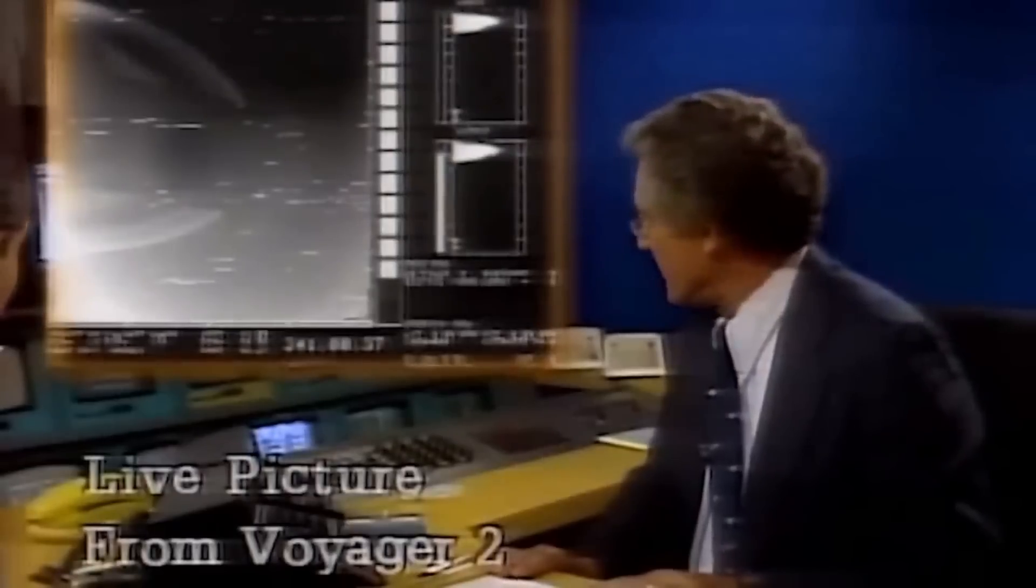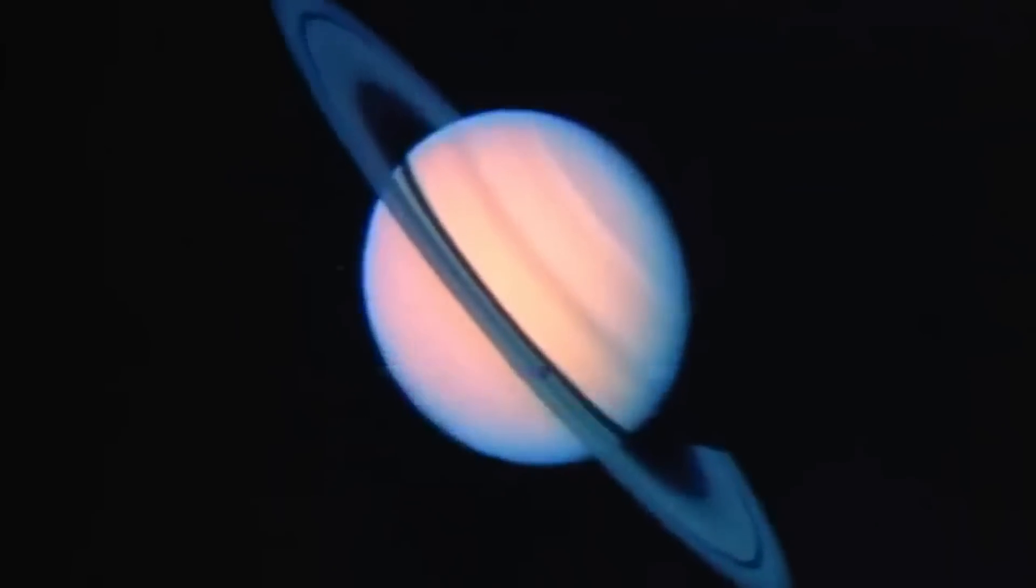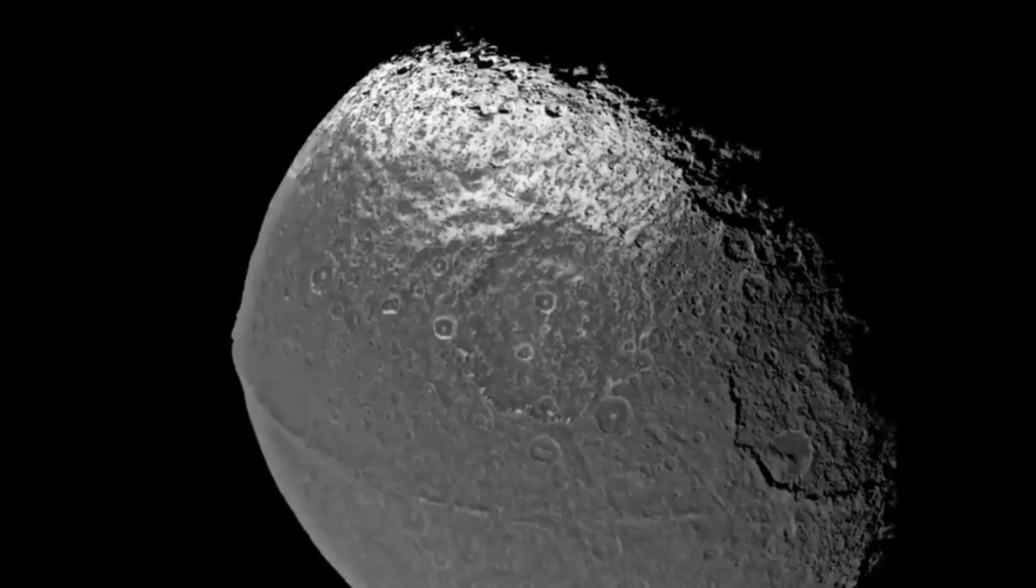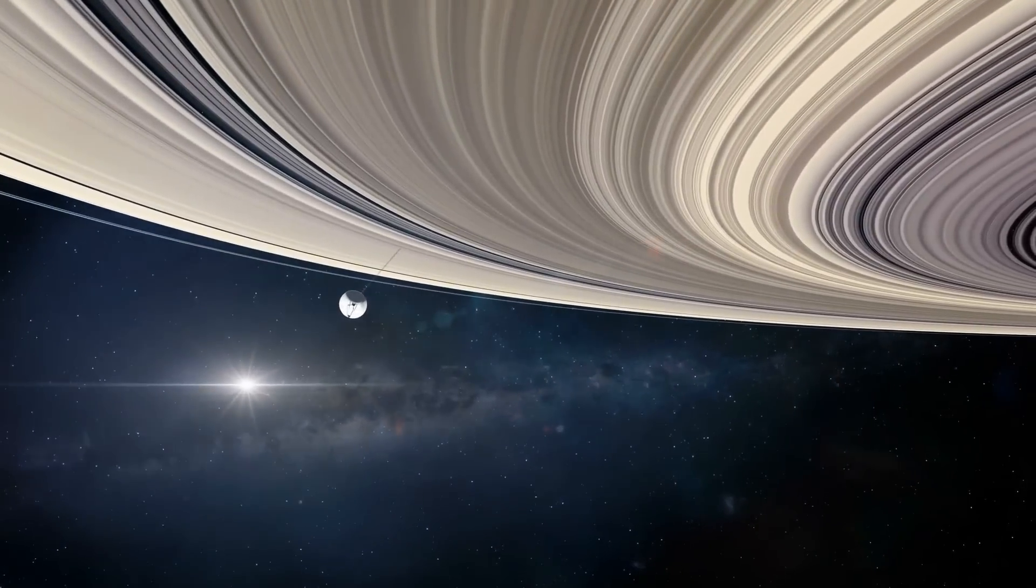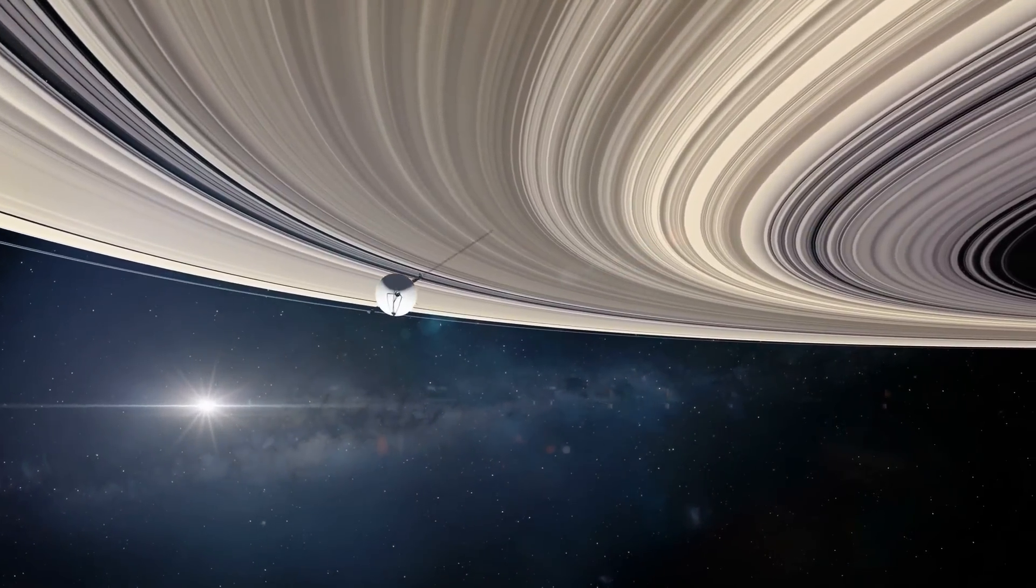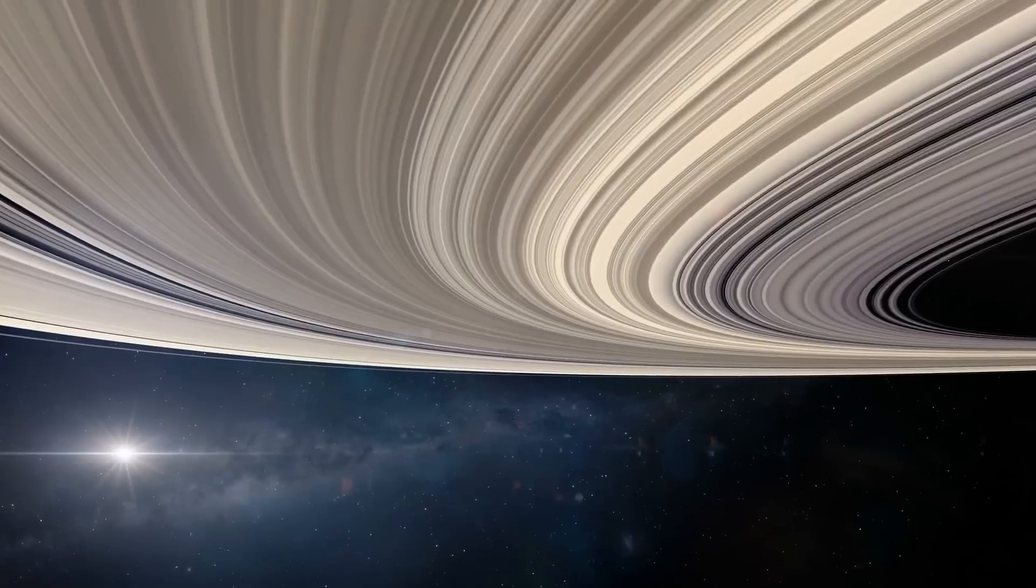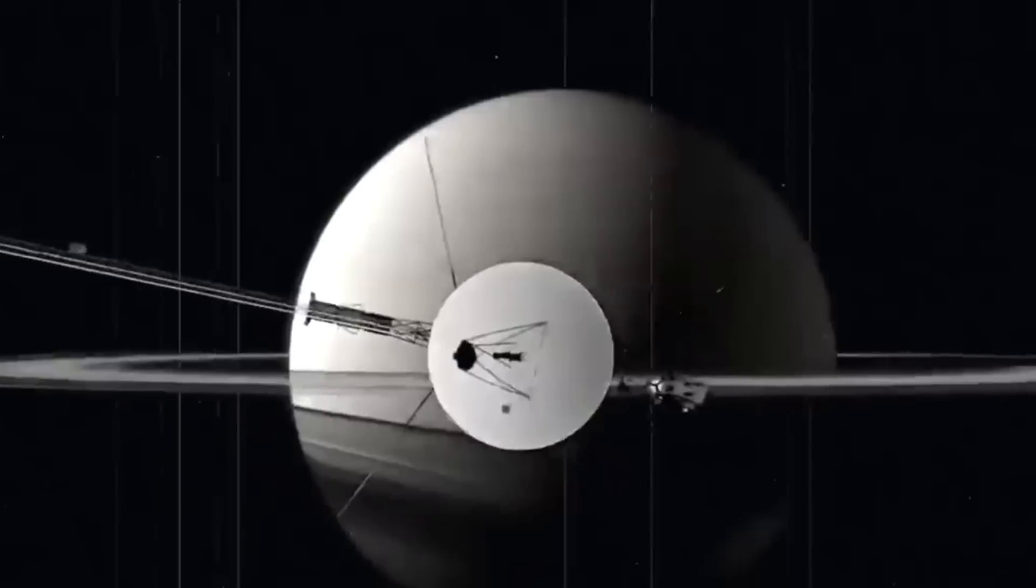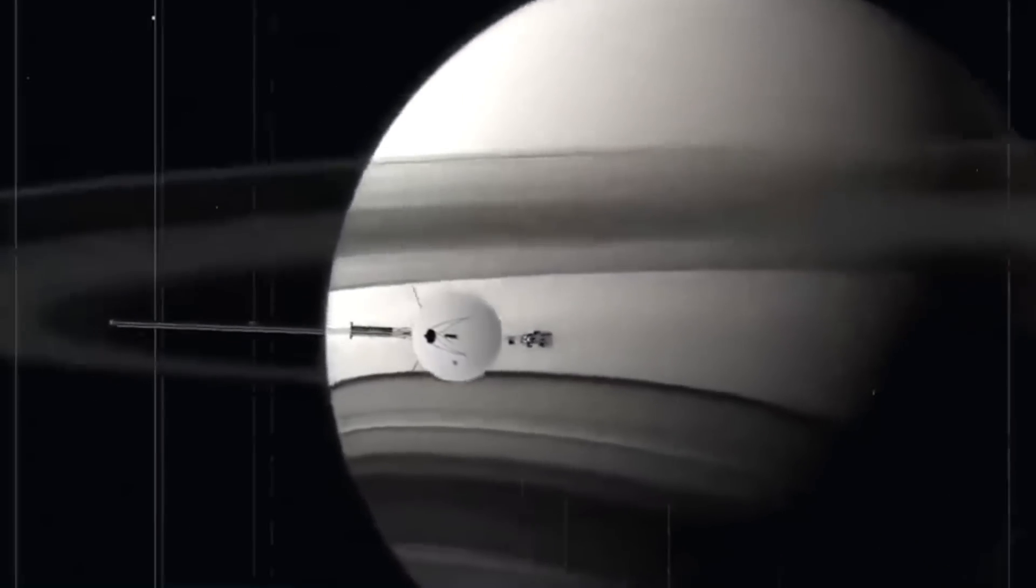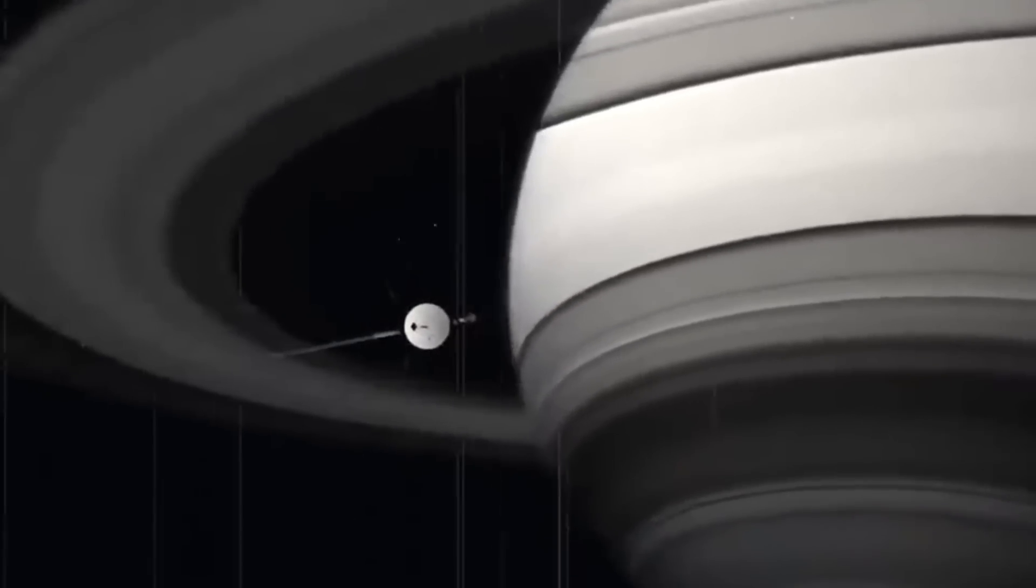Two years after it left the Jovian system, on August 22, 1981, it started taking pictures of the moon Iapetus. Voyager 2 did the same kind of photo mission as its predecessor, but it got about 14,290 miles, or 23,000 kilometers closer to Saturn. At 121 UT on August 26, 1981, at a distance of about 63,000 miles, Saturn was at its closest point, or 101,000 kilometers.